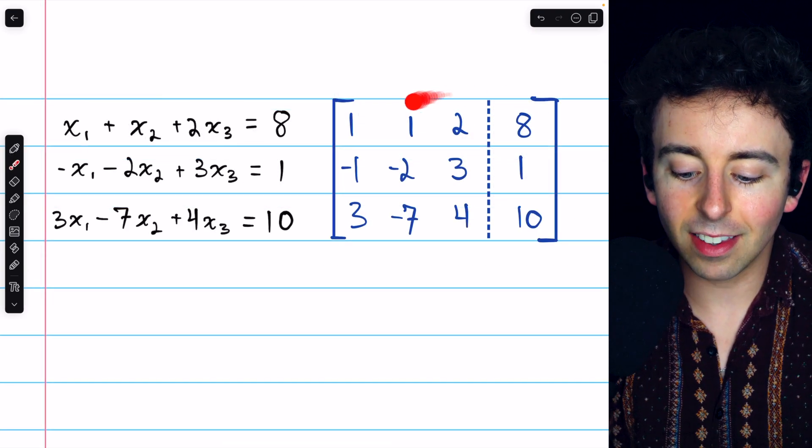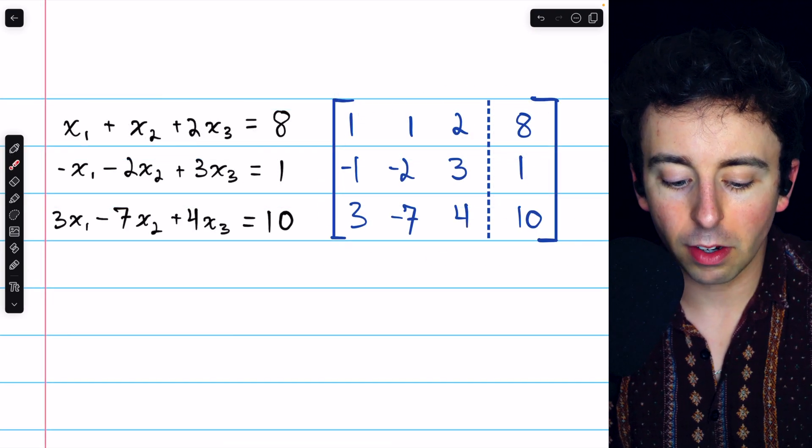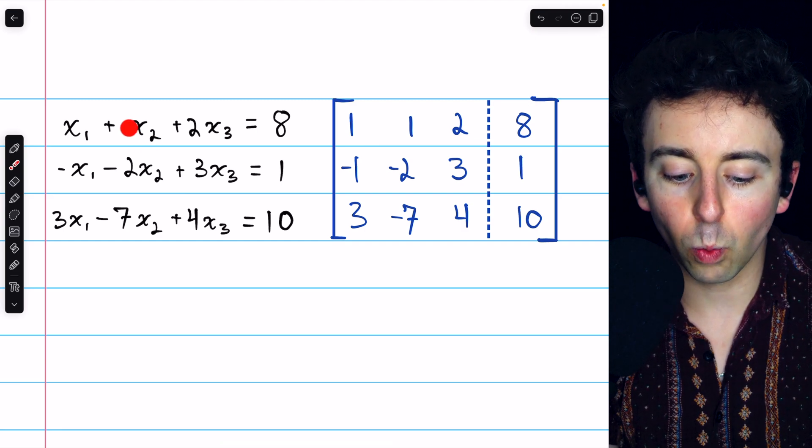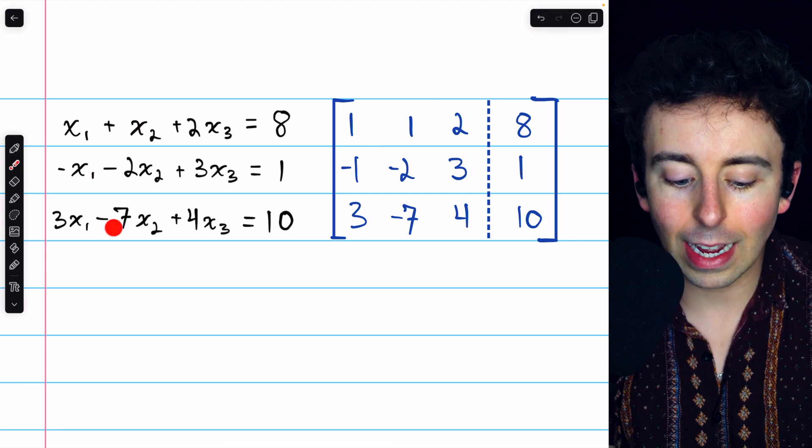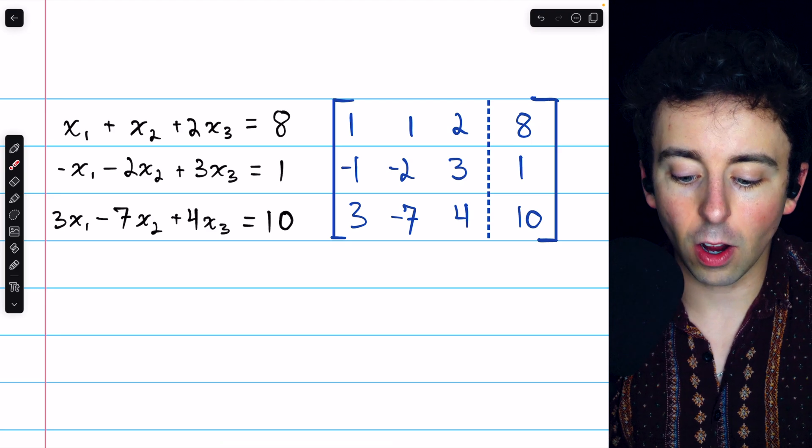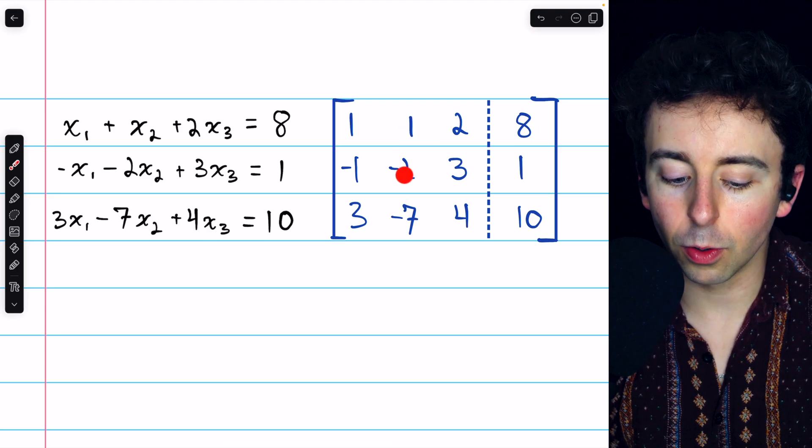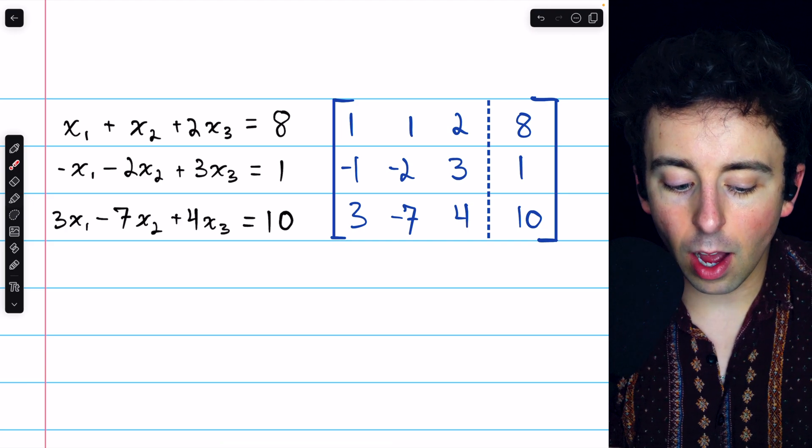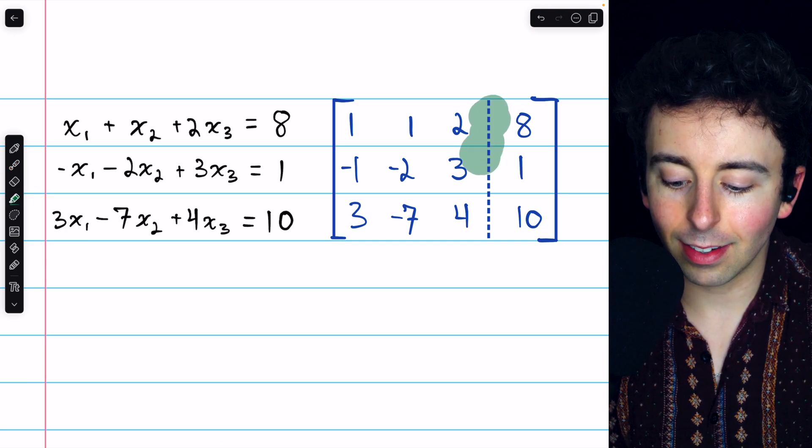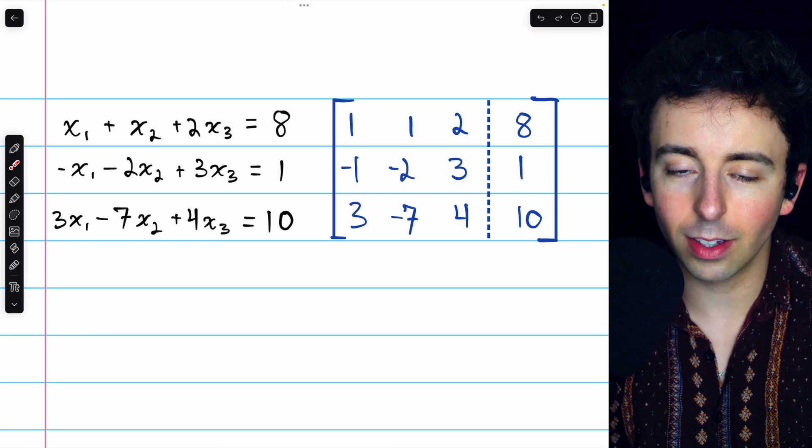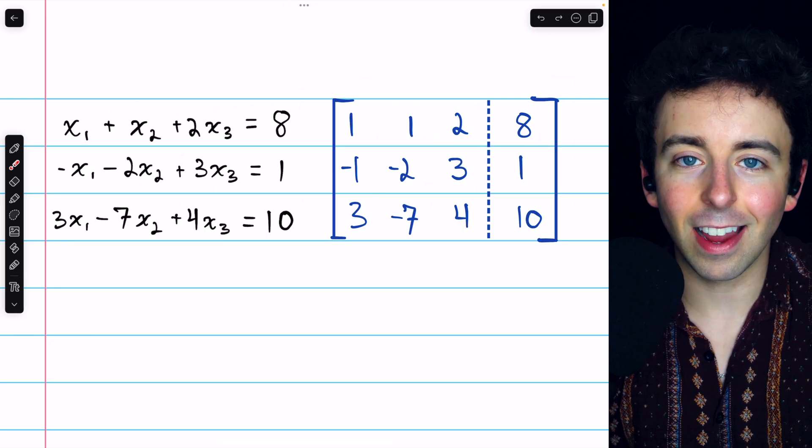Completing that process gets us this augmented matrix. For example, you can see the coefficients of x2 are 1, negative 2, and negative 7. And so we see in column 2 of our augmented matrix, 1, negative 2, and negative 7. Often, a vertical line like this is used in an augmented matrix to separate coefficients from constants, but it isn't necessary.